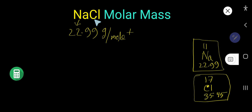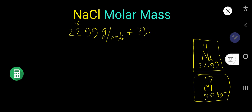Now we have to add the molar mass of chlorine. The average atomic mass of chlorine is 35.45, and we express this in grams per mole as well.